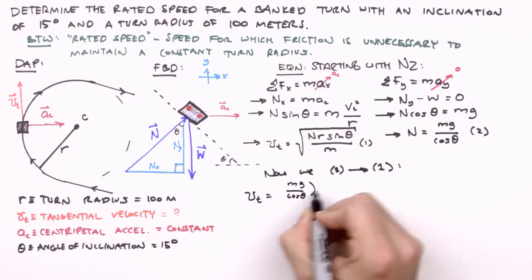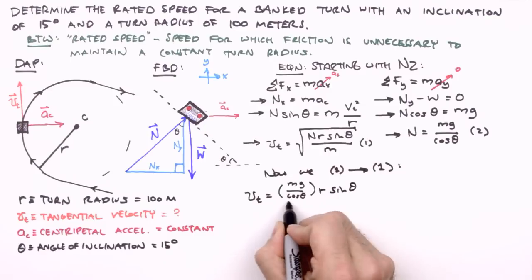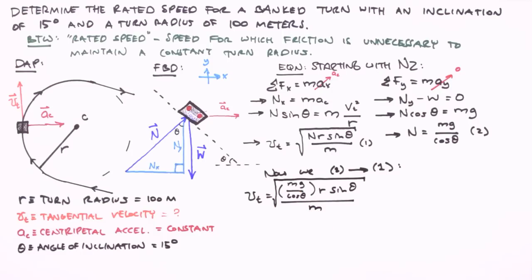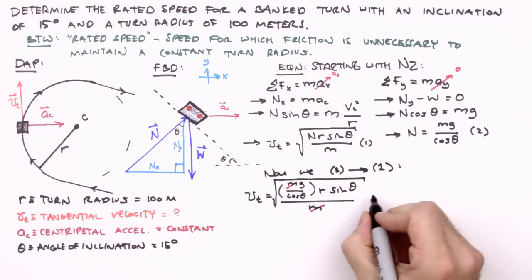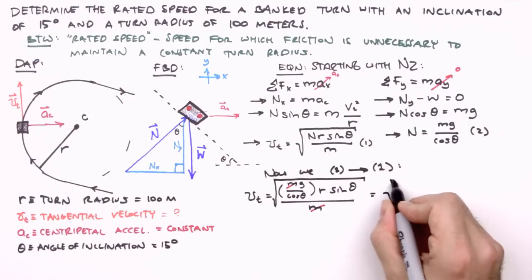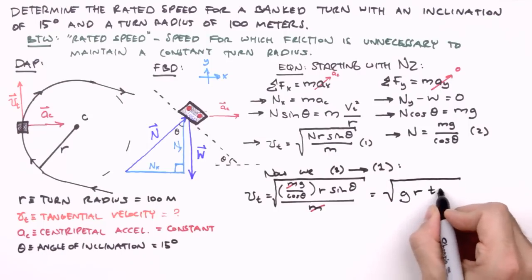So now we insert equation two into equation one, and we get v sub t equals the square root of mg over cosine theta times r sine theta divided by m. The m's divide out, revealing an interesting physical insight about rated speeds, and the trigonometric functions combine to give us tangent theta. So we're left with v sub t equals the square root of g r tangent theta.